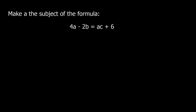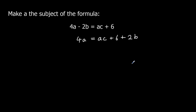Another one: make 'a' the subject of the formula again. I've got 'a' in two different terms, so I need to get them on the same side — get everything else to the other side as my first step. So if I add 2b to both sides, I get 4a equals ac plus 6 plus 2b.